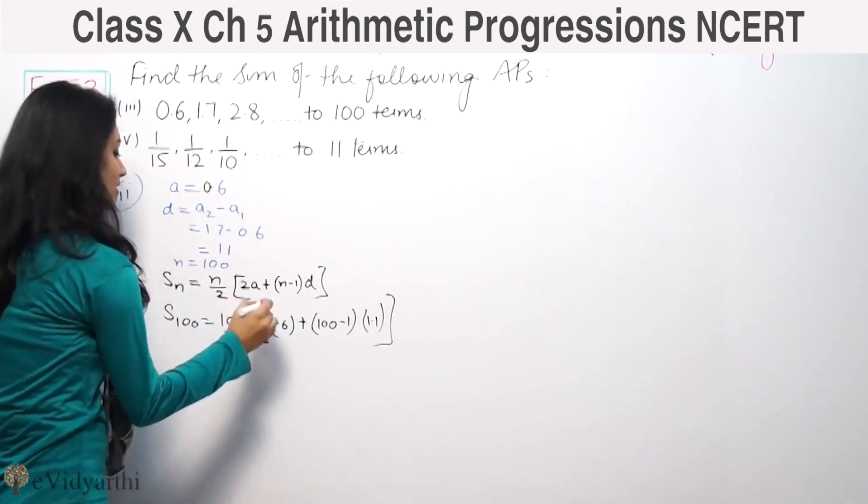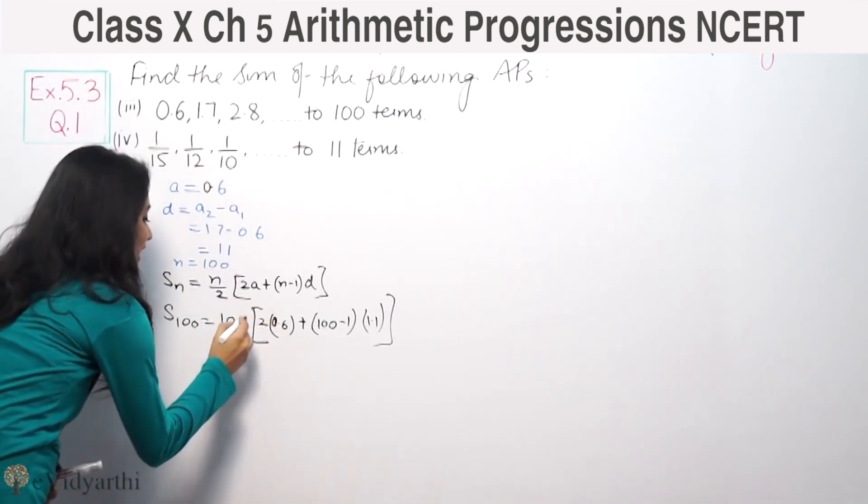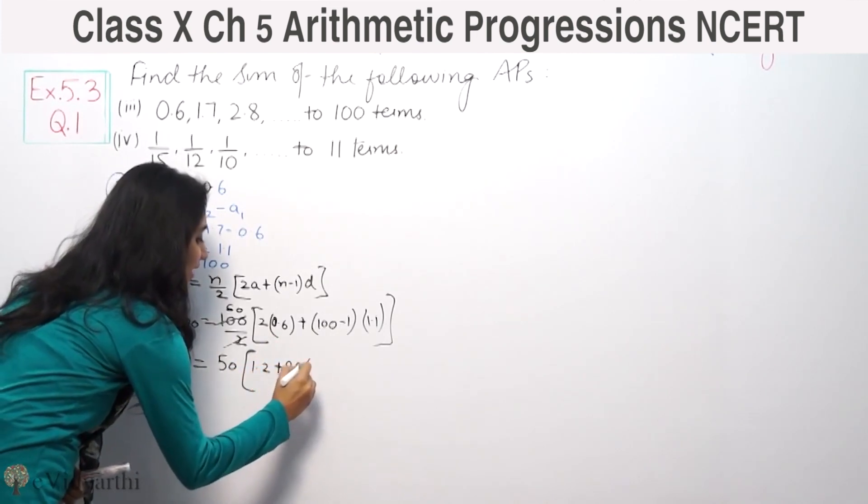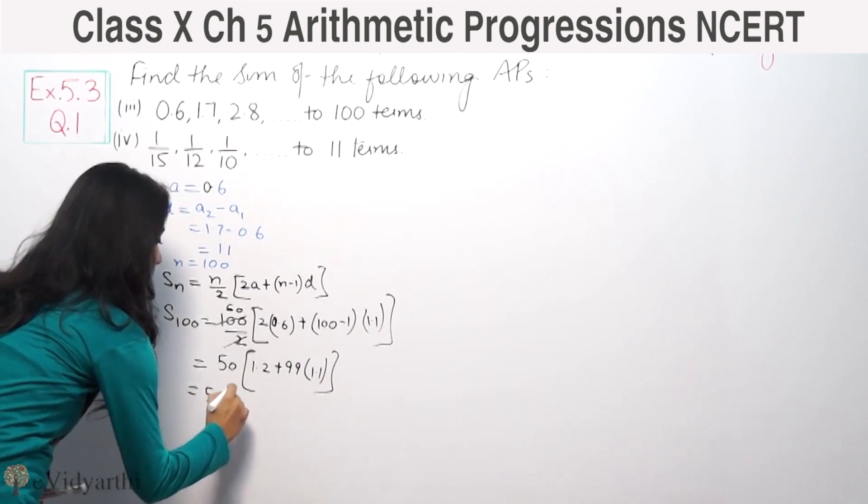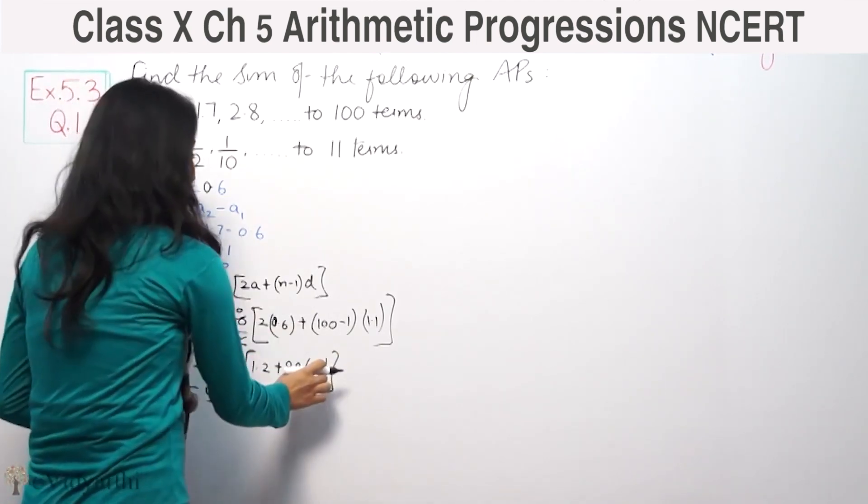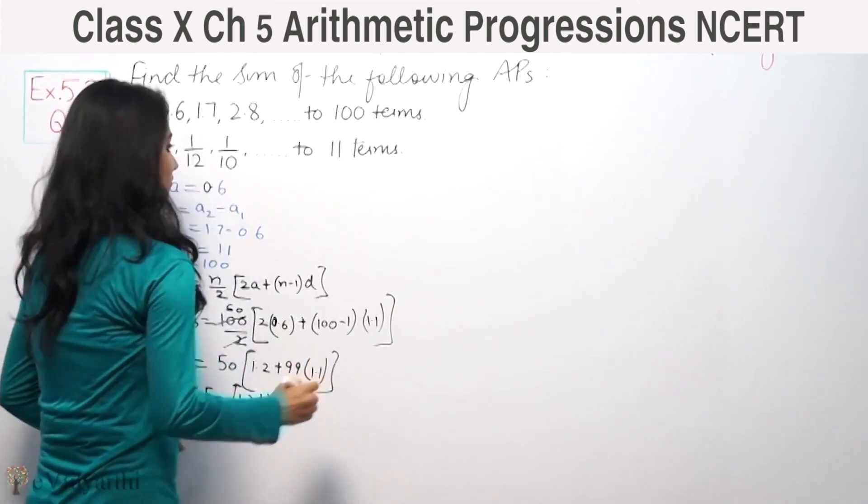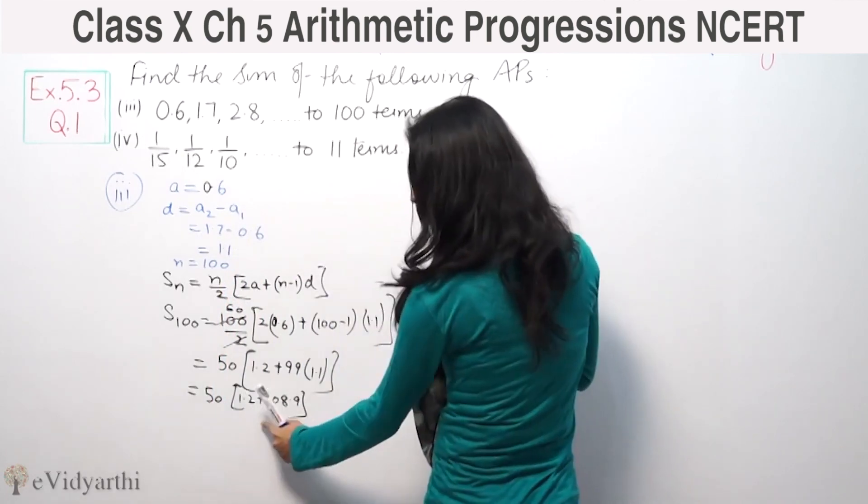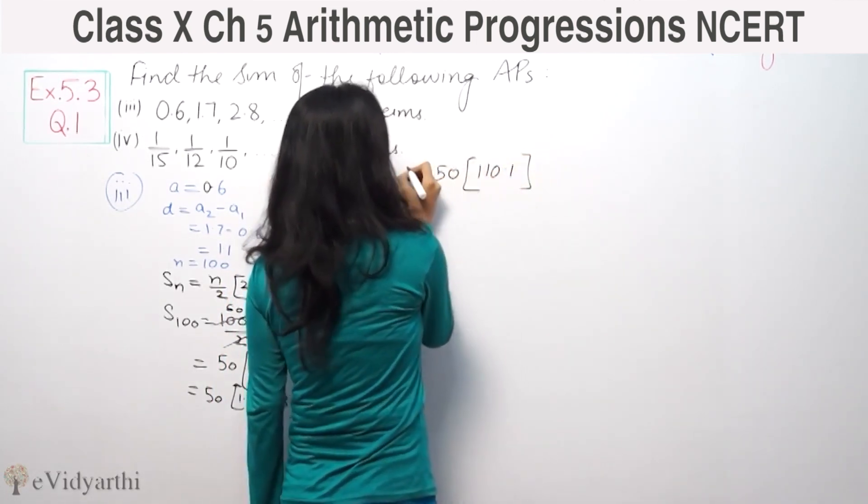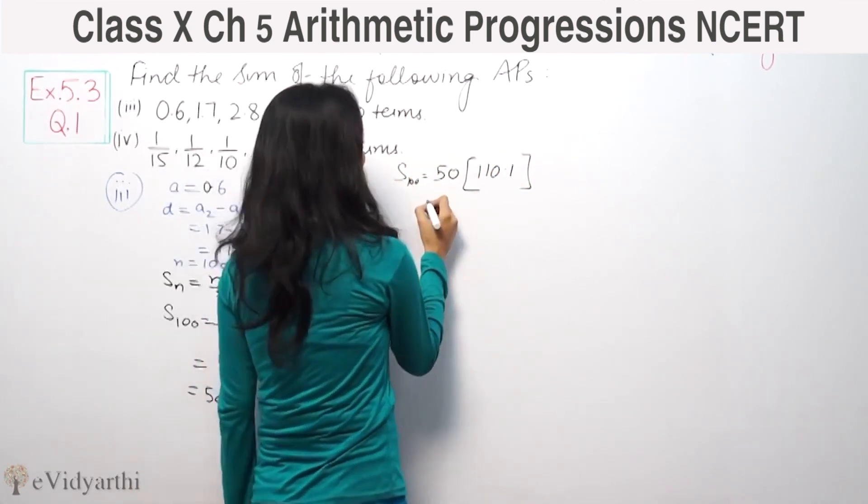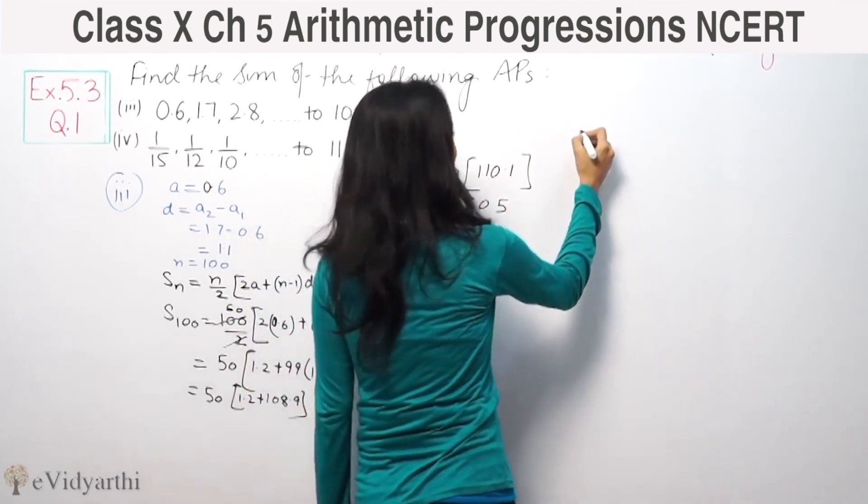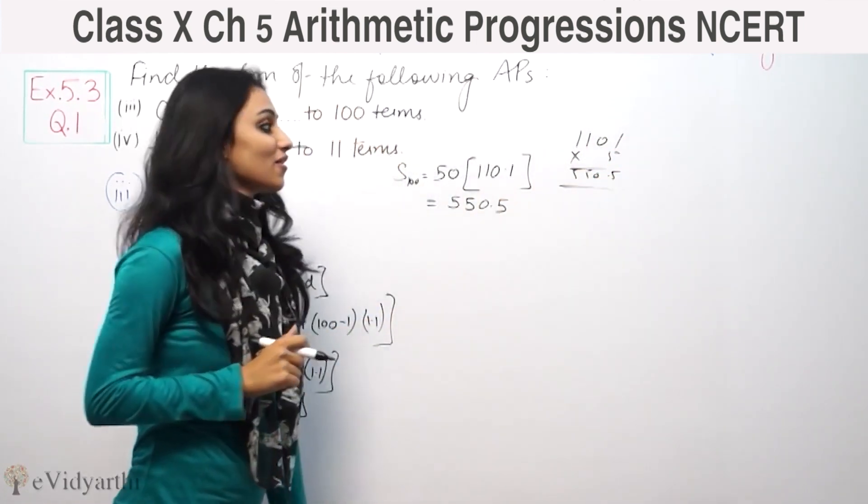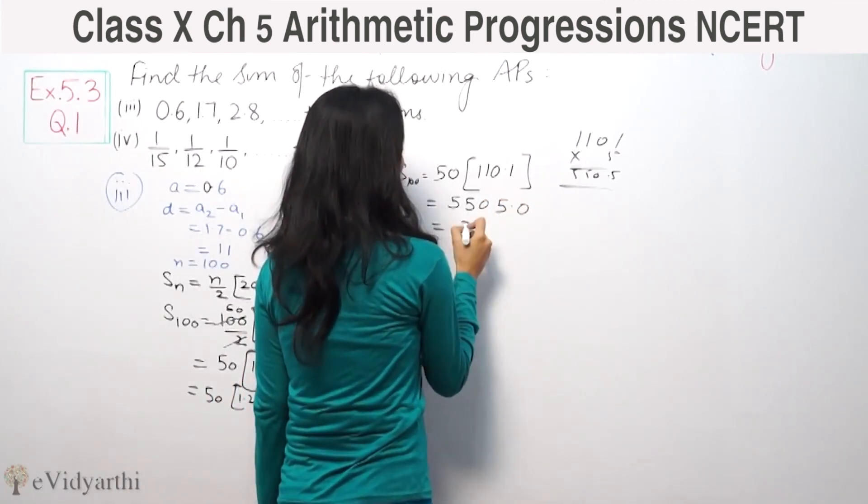This is 50, bracket, 0.6 into 2 is 1.2 plus 99 into 1.1. 99 into 1.1 is 108.9. So 50, bracket, 1.2 plus 108.9 equals 110.1. So we multiply, we have 5505. So the answer is 5505.